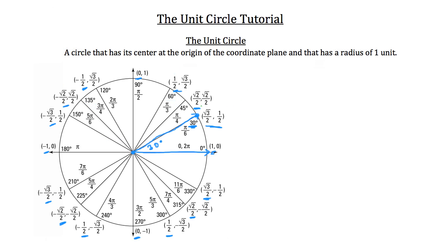Now you can arrive at these y values the same way. The y value is simply the sine of all these different angles in standard position. So the y coordinate of all these points that lie on the edge of this unit circle can all be found by simply taking the sine of that angle. For example, if you took the sine of 120 degrees, you'd get a decimal value equivalent to root 3 over 2. If you want to convert a decimal back into a fraction, you can take a look at our calculator tutorials to teach you how to do that.